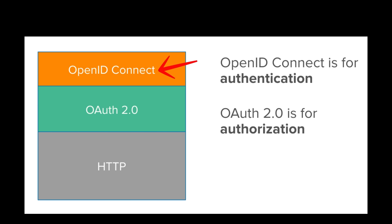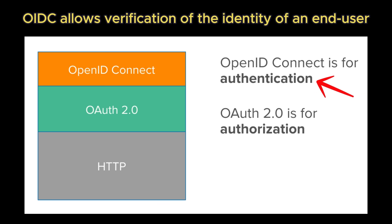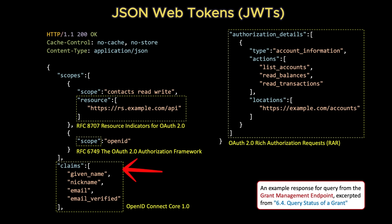OpenID Connect is actually a thin identity layer built on top of OAuth 2.0. The TL;DR is that OAuth 2.0 provides authorization — this app may access these resources — and OIDC adds authentication — this user is who they say they are. It uses JSON Web Tokens, or JWTs, for representing identity claims, making it lightweight, web-native, and easy to integrate with modern stacks like JavaScript single-page applications, mobile apps, and APIs.